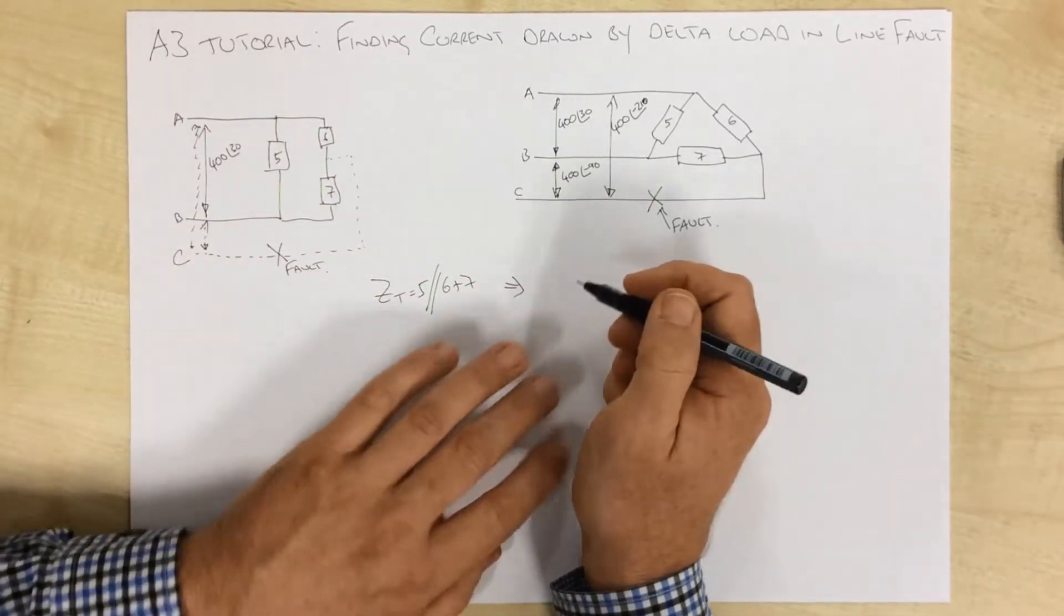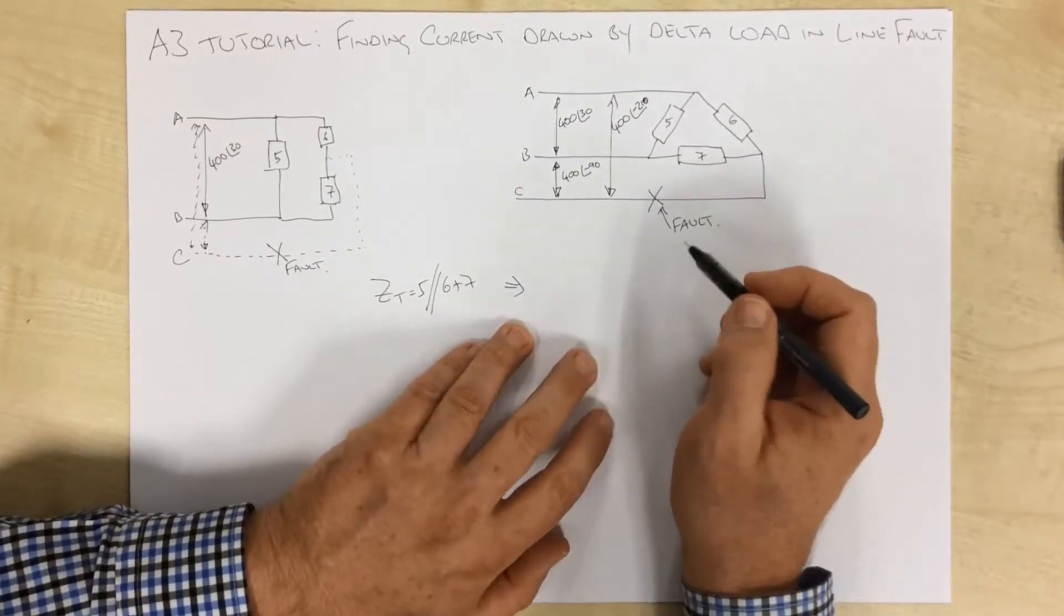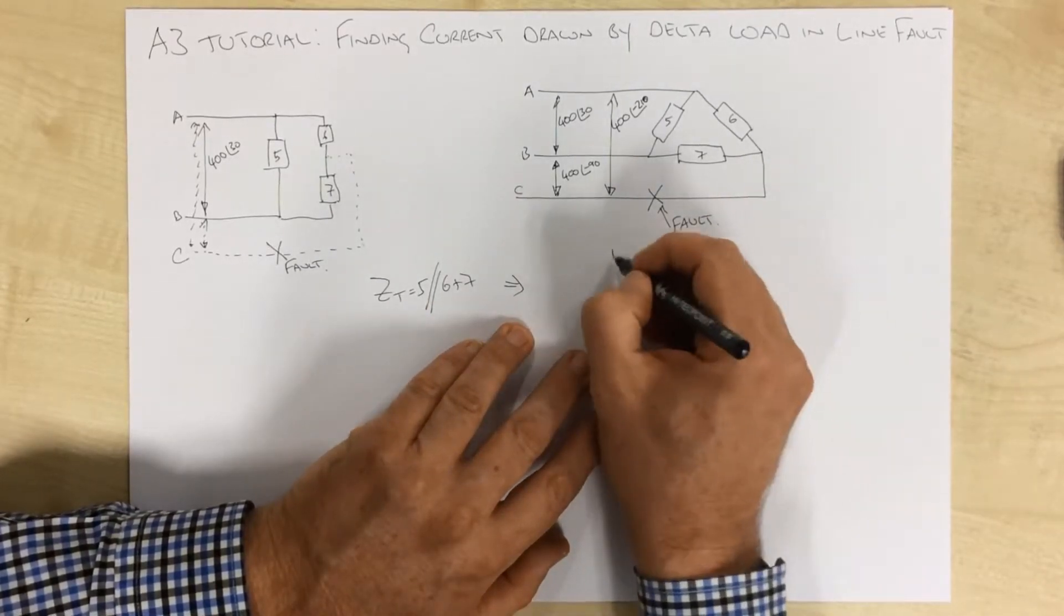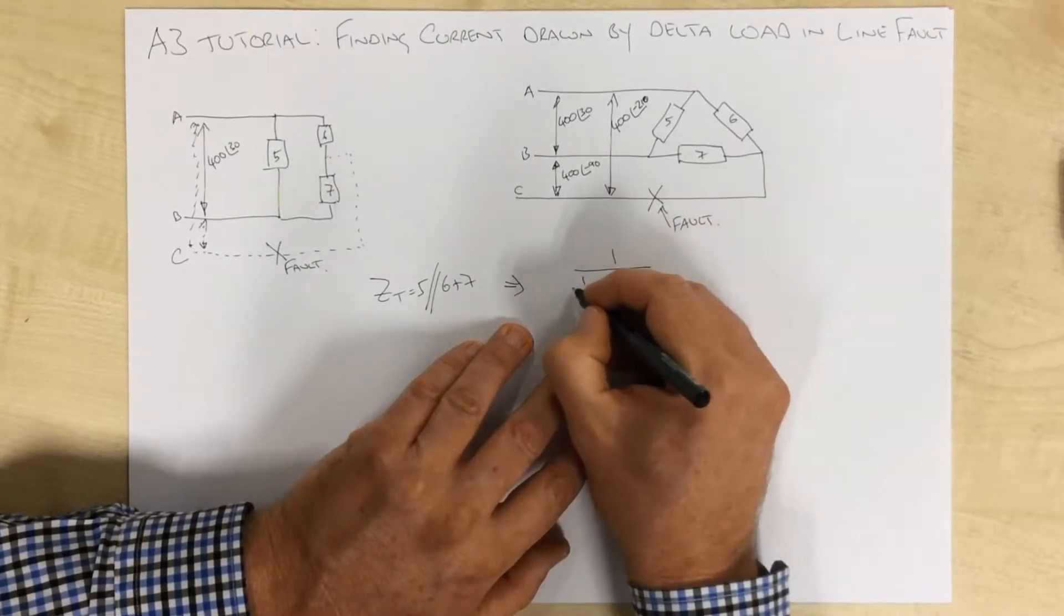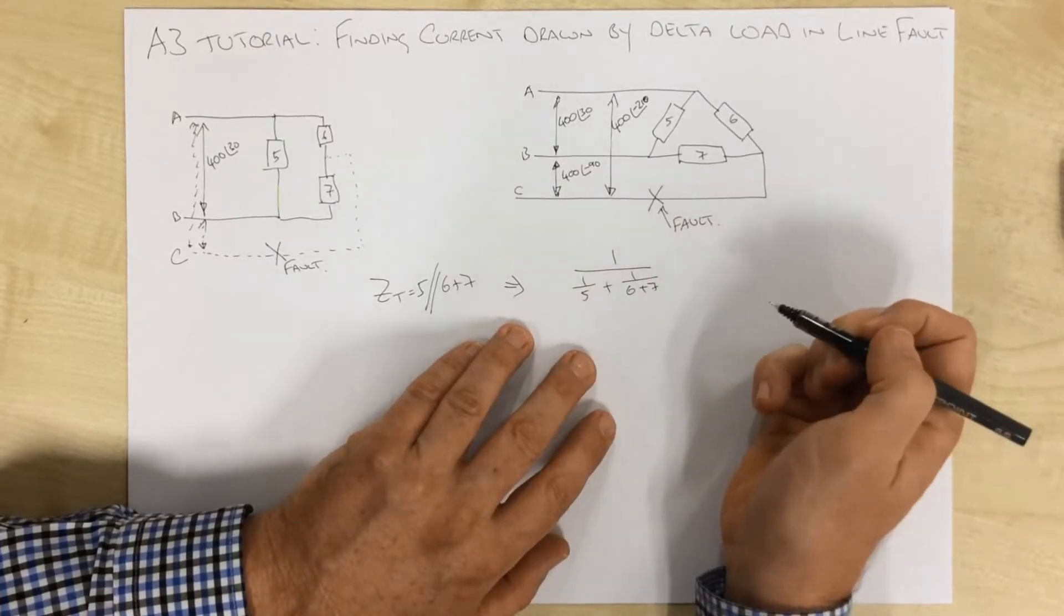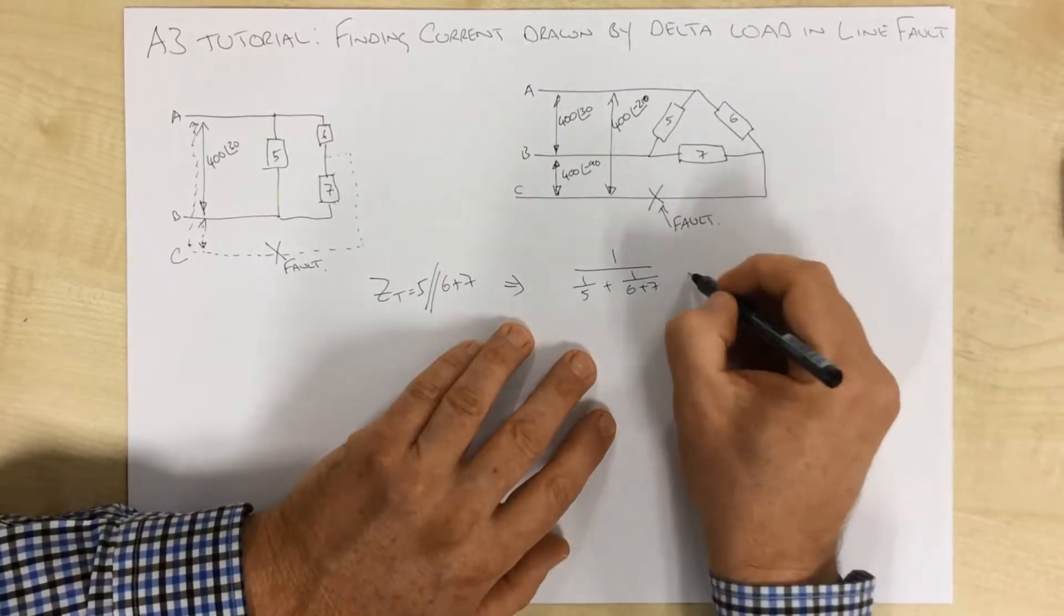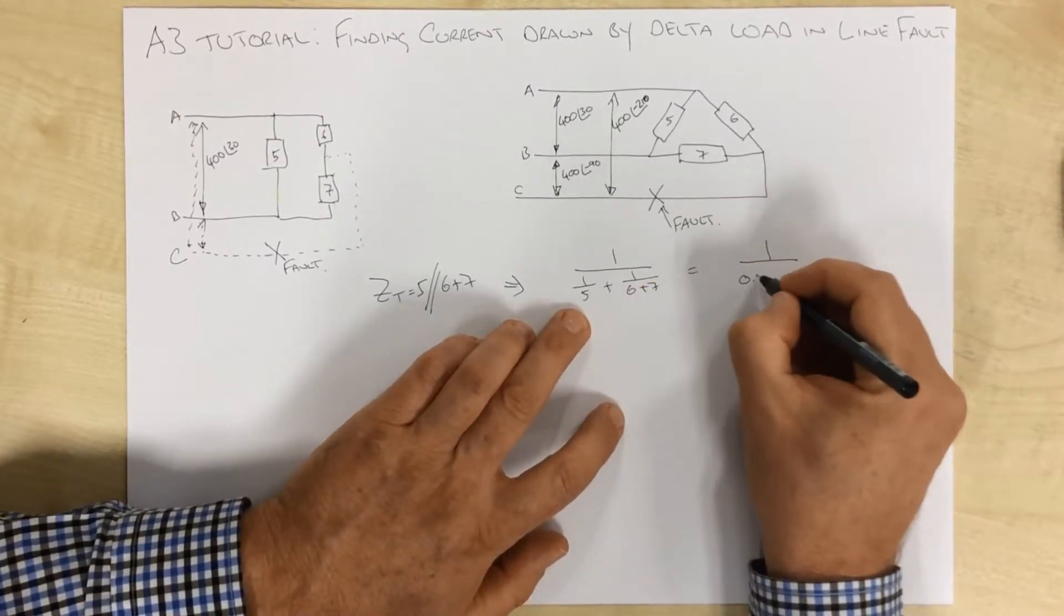And we can solve that using the sort of stuff that you probably learned at high school or certainly in first year. The total impedance there is 1 over 1 over each of these. So it's 1 over that plus 1 over 6 plus 7. And that is 1 over 5, 0.2.